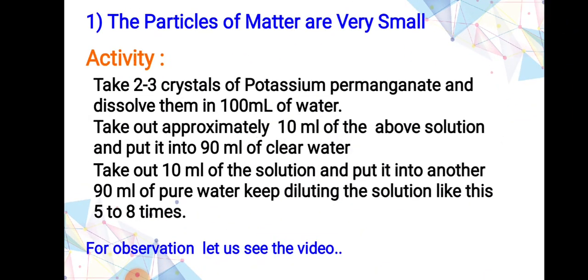The first characteristic is that particles of matter are very small. For this activity, take two to three crystals of potassium permanganate — or you can use ink — and dissolve them in 100 ml of water. Take out approximately 10 ml of the solution and put it into 90 ml of clear water. Repeat this dilution five to eight times. You can also do this activity with Dettol. Even at the last beaker, you will still get a color or smell.